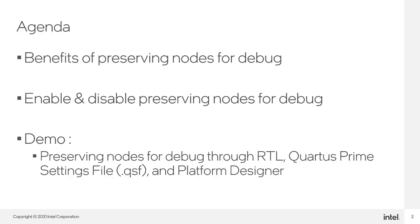First, we're going to look at the benefits of preserving nodes for debug to understand why a user would want to use this feature. Then, we'll look at how to enable and disable preserving nodes. Finally, we'll go through a demo that will allow us to look at how to preserve nodes for debug through RTL, the Cordis Prime settings file, and Platform Designer.